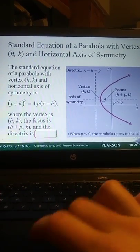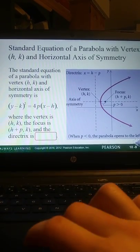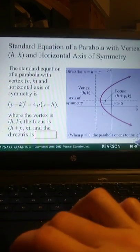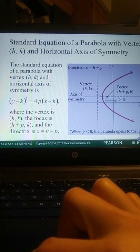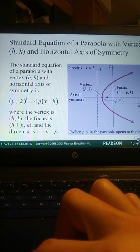Think of the axis of symmetry like the value Y equals K. That's unchanging. And then your directrix would be the line X equals H minus P.